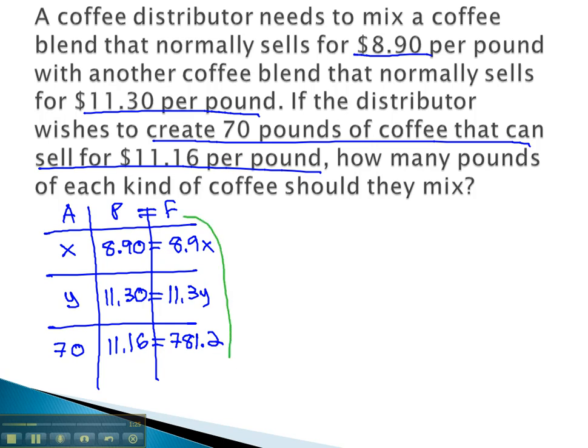Now we can pull our equations we will use to solve. The last column, 8.9x plus 11.3y equals 781.2. With two variables, we need a second equation, which we can pull from the first column, x plus y equals 70.